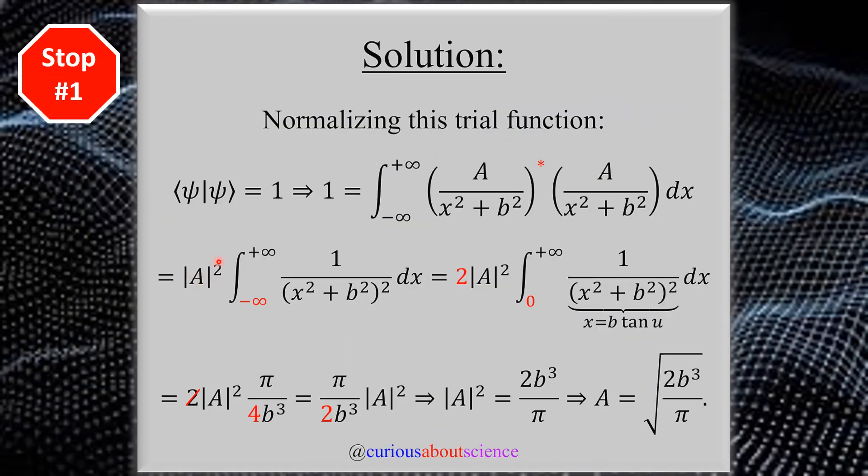Stop one, as always we have to normalize the trial function. So ⟨ψ|ψ⟩ = 1, put that into the integral. Noting that we have constants everywhere, bring A² out front. We have a denominator squared here, but we realize we have an even integrand, so chop that integral in half and double it.